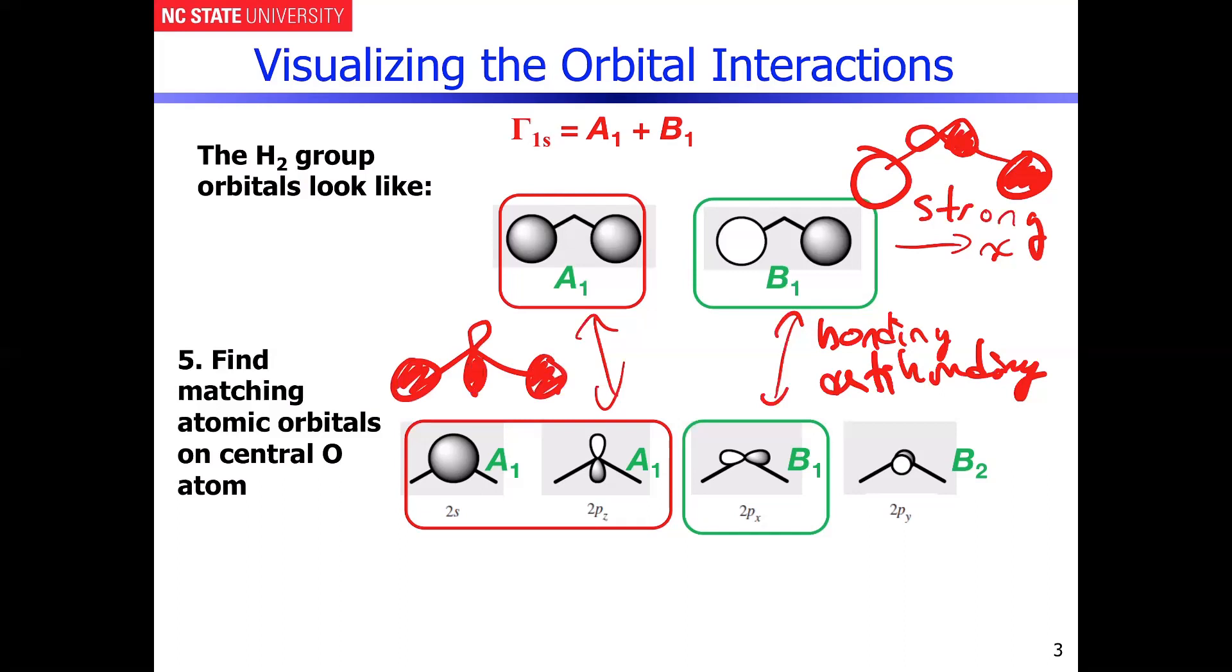If you can see here, there's an in-phase combination that occurs, but it's an overlap that's in essence similar to a side-on overlap that you would get with a pi orbital.